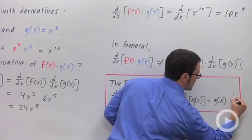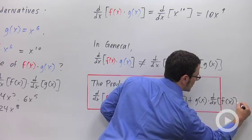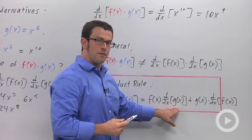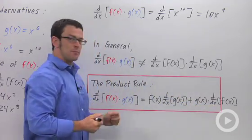I'm going to go out of my box here, times the derivative of f of x. The first times the derivative of the second, plus the second times the derivative of the first. That's the product rule.